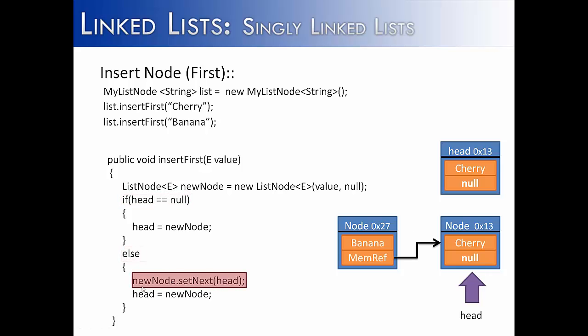And the else statement first says newNode.setNext(head). You saw right here, it changed the next value from null to the memory reference, which would be this entire node right here. Not just cherry, but the entire node. And then what it does is it says this node is no longer the head because it's no longer the front of the list. So head is equal to this node. And we reflected the change up here. So we're done with that method call.